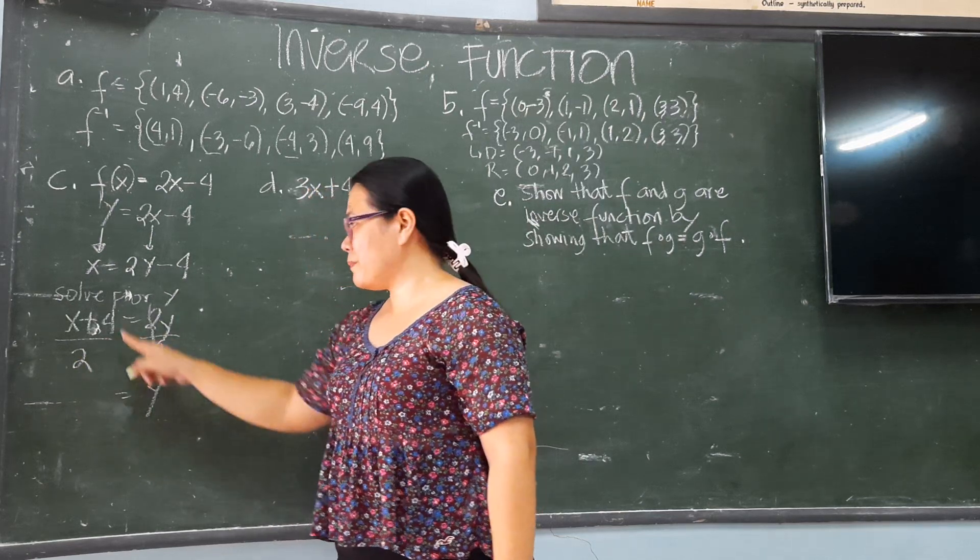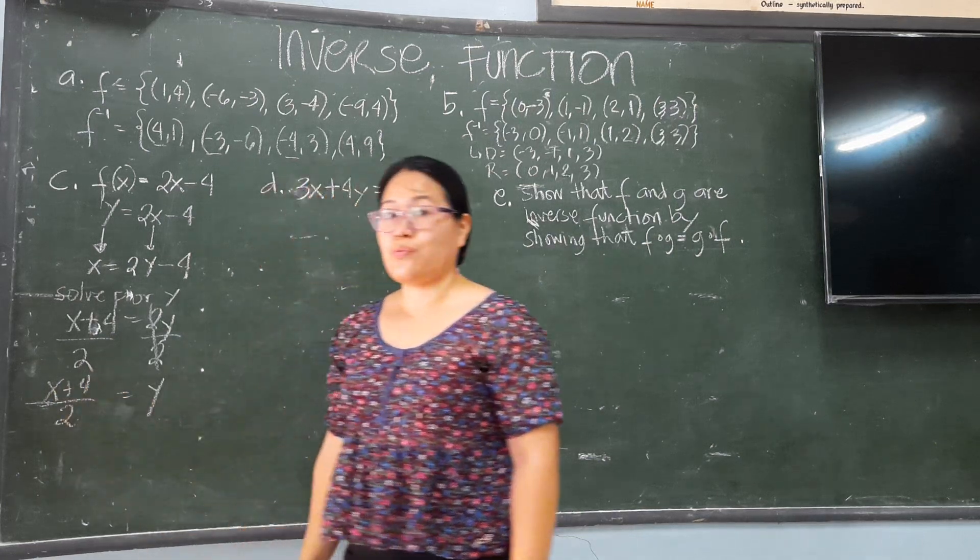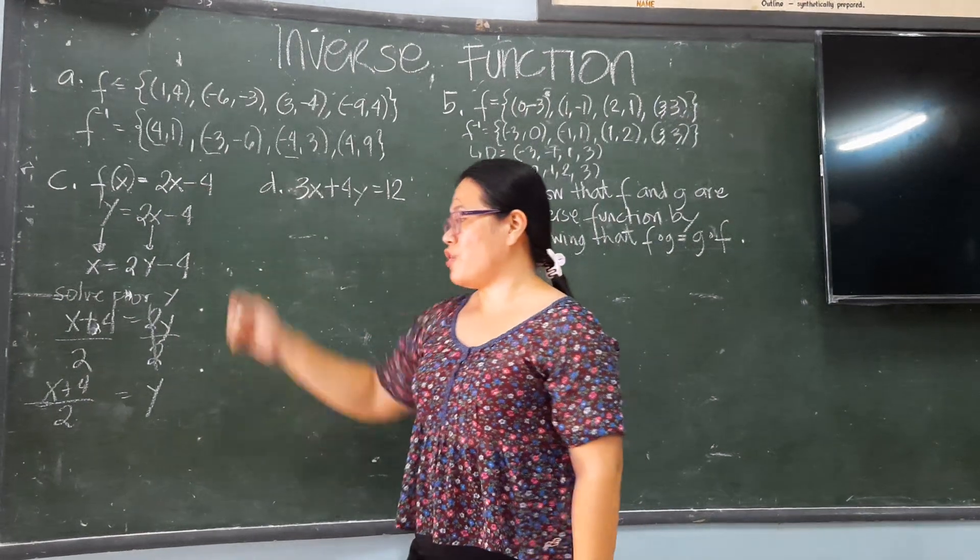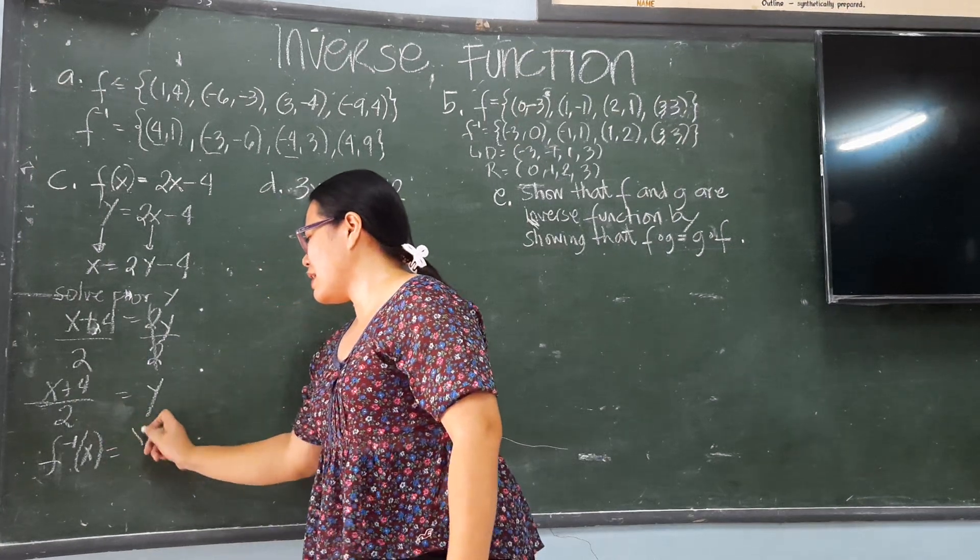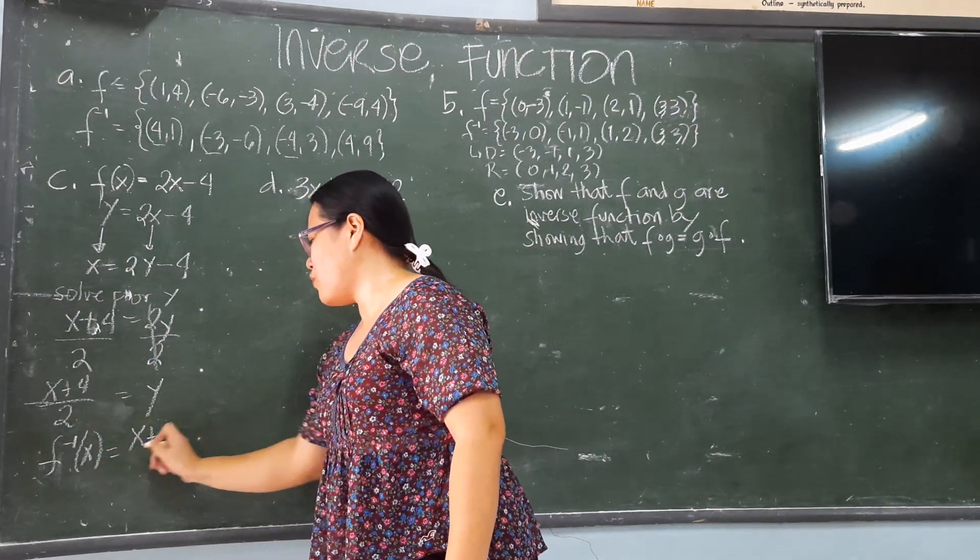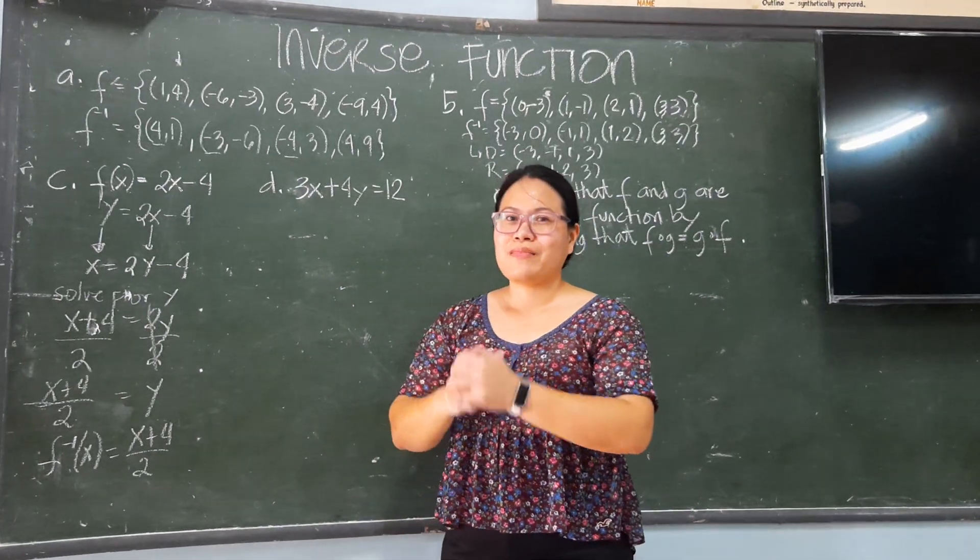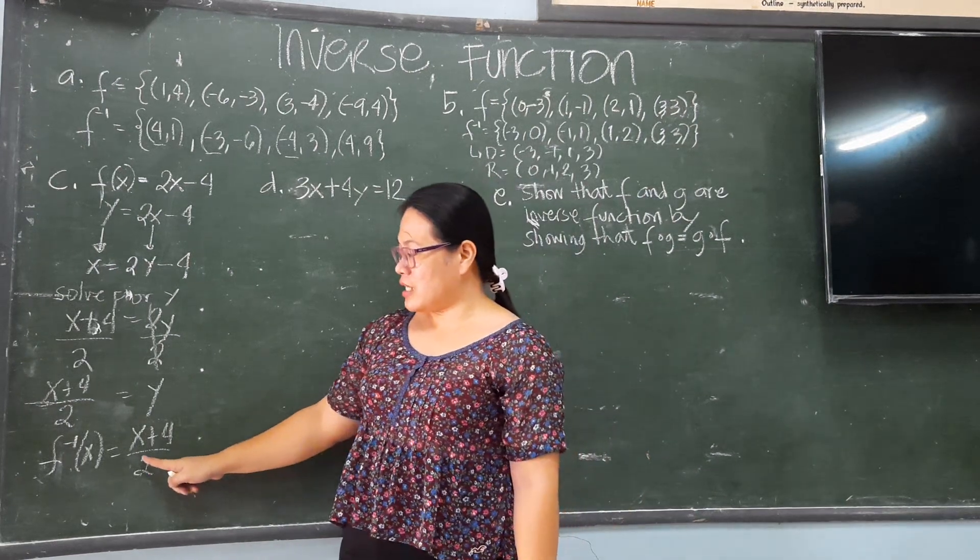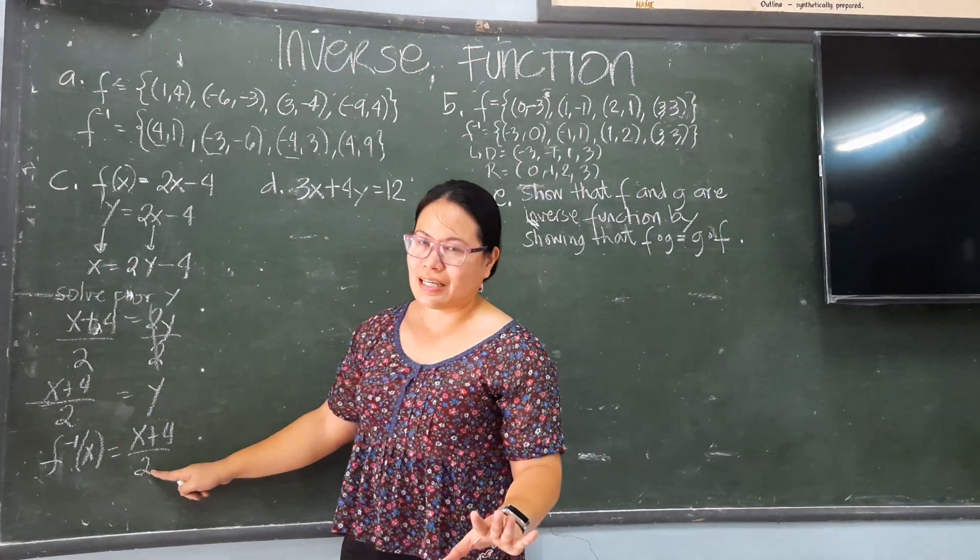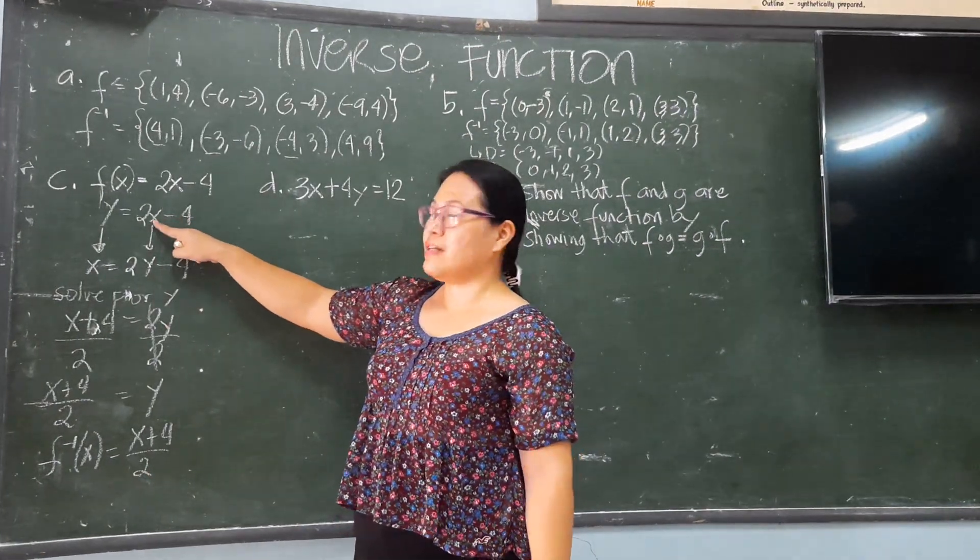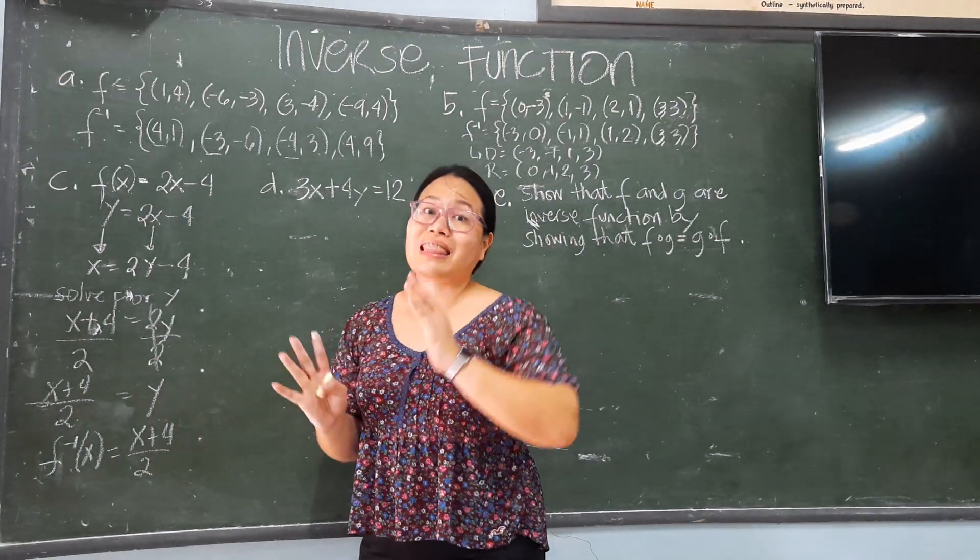So that becomes x plus 4 equals 2y. Divide it with 2 so only y remains. y equals (x + 4)/2. So the inverse function is f^(-1)(x) = (x + 4)/2. That is the inverse function. To get the domain and range, since this is a linear function, to get the domain all real numbers. In here, to get the range, you are going to get the inverse.